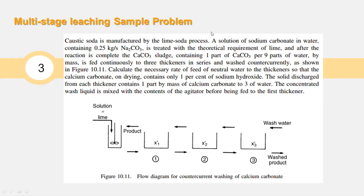After the reaction is complete, the sludge containing one part calcium carbonate and nine parts of water by mass is fed continuously to three thickeners in series and washed counter-currently. The sludge that contains one part calcium carbonate per nine parts of water is withdrawn at the bottom part of the initial equipment, where the concentrated wash water is mixed with the solution to produce the necessary caustic soda.